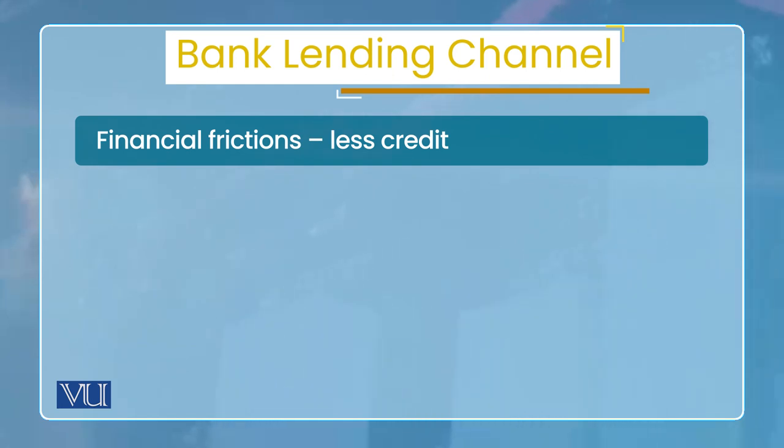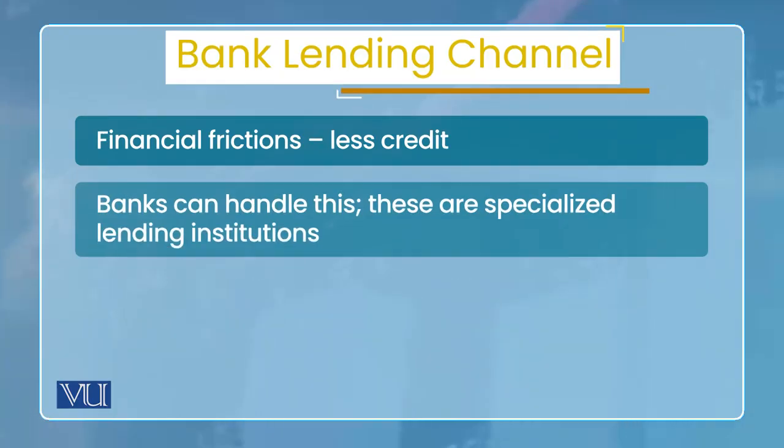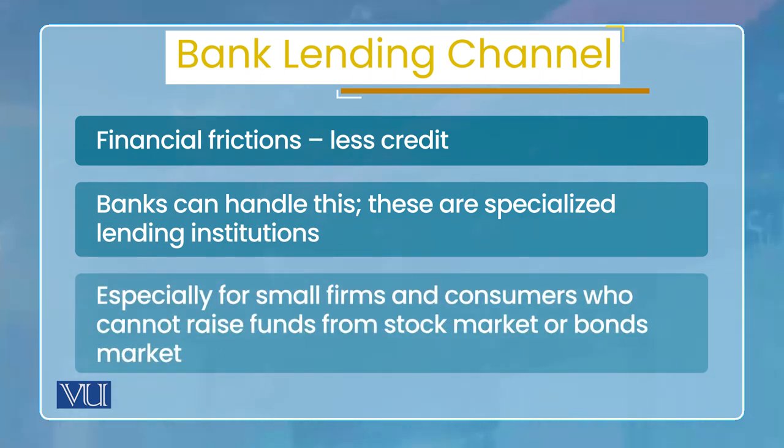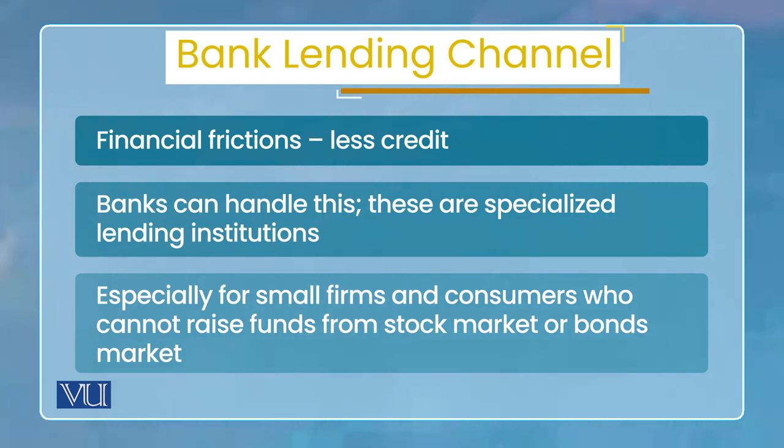Bank lending میں اور lending میں یہ فرق ہے کہ جو مَیں moral hazard اور adverse selection کا financial market کے اندر problem ذکر کر رہا تھا، وہاں borrowers ہیں، lenders ہیں - مَیں نے banks کا نام نہیں لیا۔ اس کا مطلب یہ ہے کہ جو lenders ہیں وہ individuals بھی ہو سکتے ہیں، یا investment companies ہو سکتی ہیں، یا کچھ ایسے funds ہو سکتے ہیں جن کے پاس پیسے ہیں اور وہ لوگوں کو دینا چاہتے ہیں۔ لیکن یاد رکھیں - bank lending channel کا مطلب یہ ہے کہ جو banks ہوتے ہیں, they have their specialization in lending۔ Banks specialized lending institutions ہیں۔